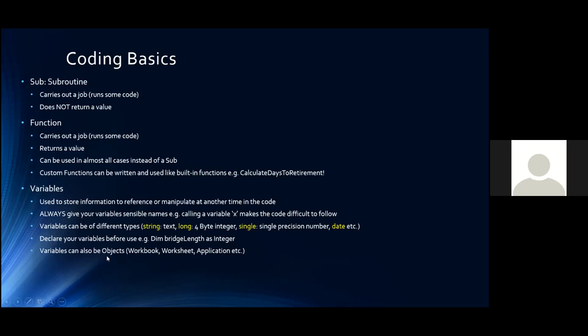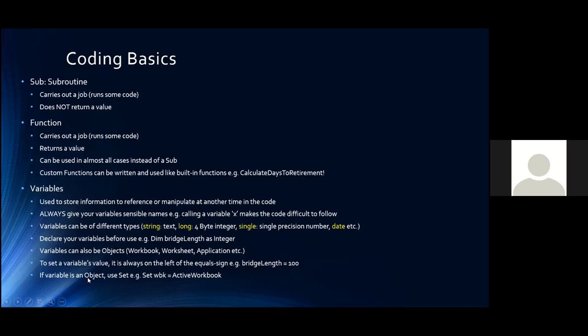Variables can also be objects — things like Workbook, Worksheet, the Application itself, and Range are all objects. To set a variable's value, it always appears on the left-hand side of the equals sign: bridge_length equals 100, never 100 equals bridge_length. If the variable is an object, you use the Set keyword — for example, Set WBK equals ActiveWorkbook — which sets that variable to be equal to the active workbook so you can do functions with it afterwards.